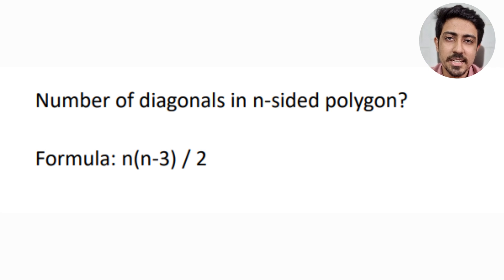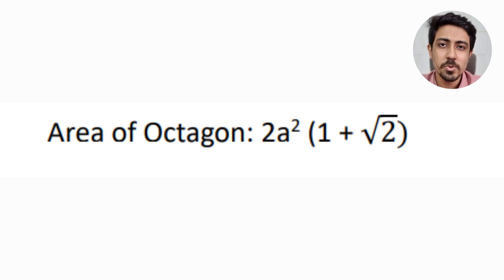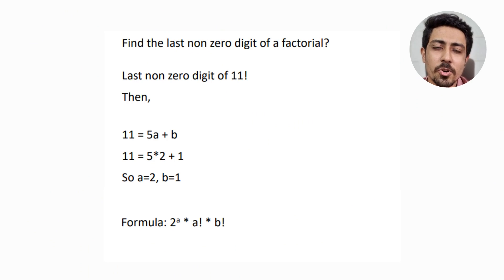To find the number of diagonals in an n-sided polygon, the formula is n(n − 3)/2. Check it for a square (n = 4): you get 2 diagonals, which is correct. Also note the area of a regular octagon is 2a²(1 + √2), where a is the side length — a formula many people miss.